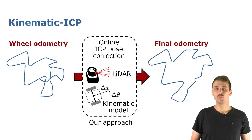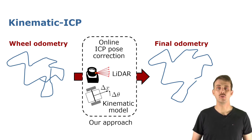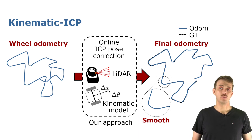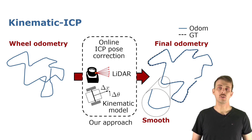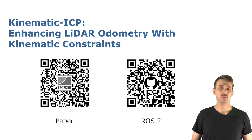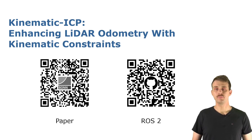Taking the wheel odometry as an initial guess and using our LiDAR scans within the kinematic motion model to correct it with ICP, we get the final odometry shown on the right. This odometry is very close to the reference — as you can see compared to the black dashed line — and it is also smooth when we zoom in at the previously critical point, because both the initial guess from wheel odometry and our correction follow a smooth motion model. If you want to know more, you can check out the QR code for the paper or test our ROS2 implementation. Thank you.